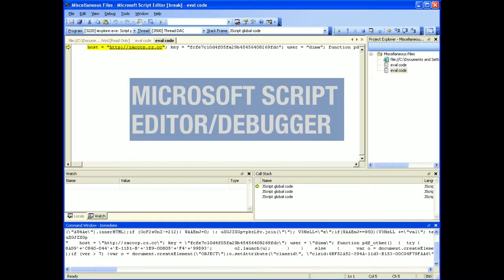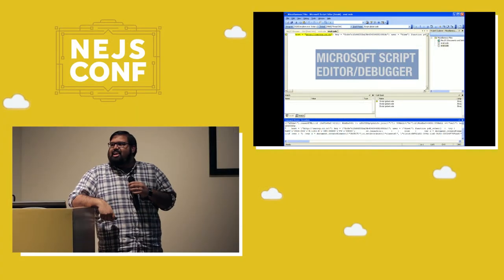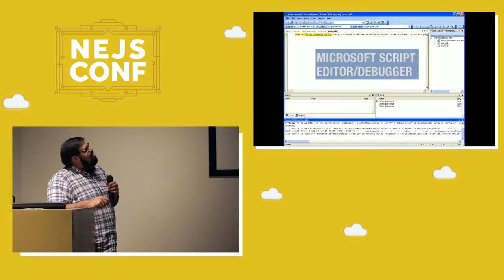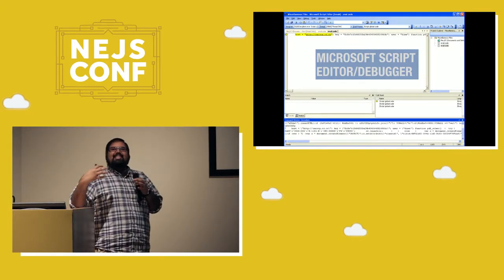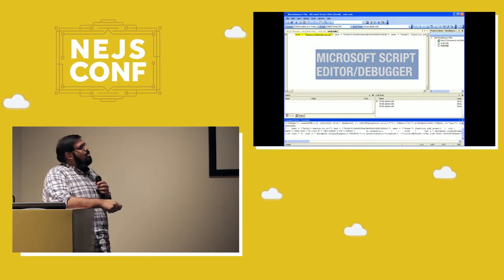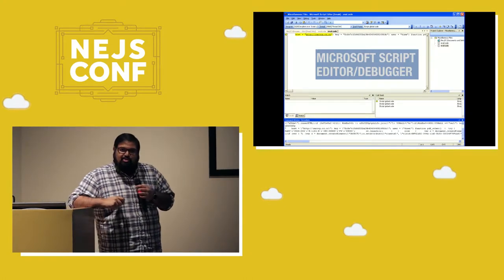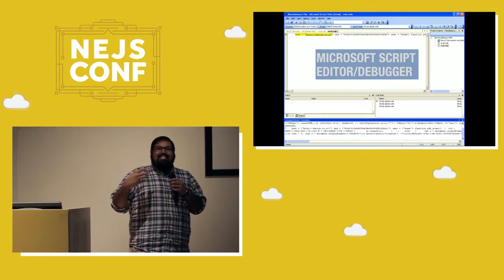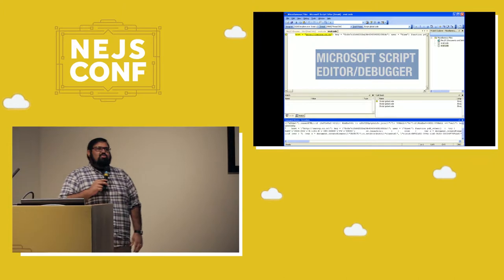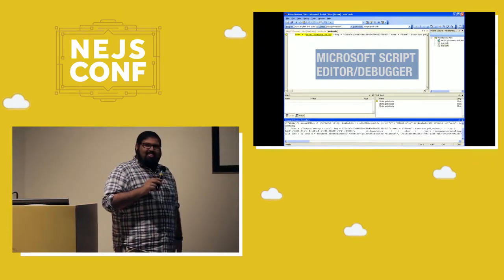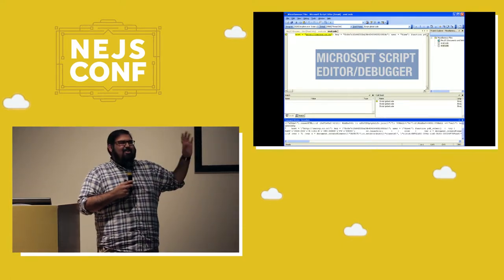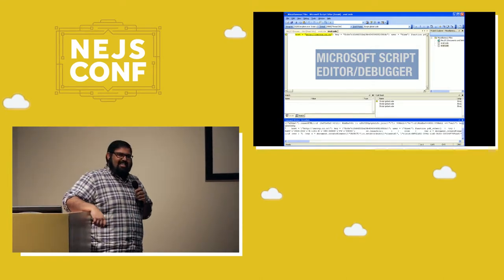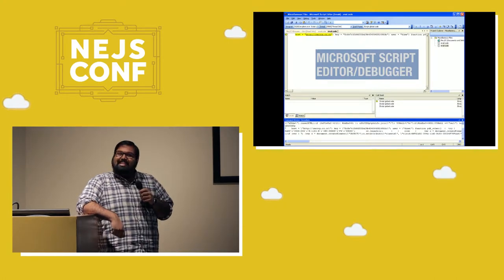History from there took us from the pre-IE6 days to the Microsoft script editor and debugger, including Windows script host errors and all the great things from Windows XP through Windows Vista, down to Windows 98. Microsoft gave us a lot of the features we now take as standard expectations for debuggers — they introduced the console, the ability to inspect your actual source code instead of just alerting things, and the ability to inspect variables. They were experimenting with DHTML and HTAs — HTML applications — as an intended competitor to Macromedia's Flash.